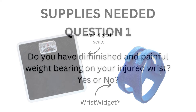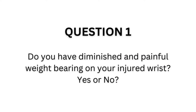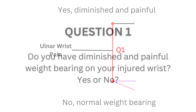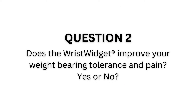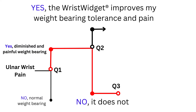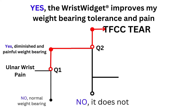If your answer is yes, move to question two. If your answer is no, skip to part two and start with question seven. If you answered yes to question two, you have a TFCC tear. If your answer is no, then skip to question three.